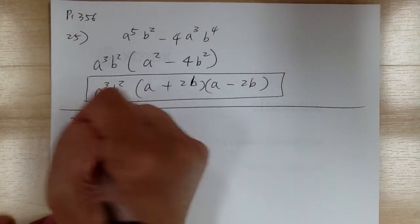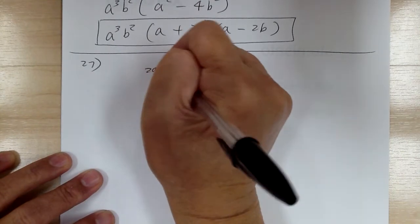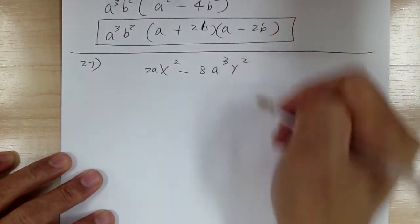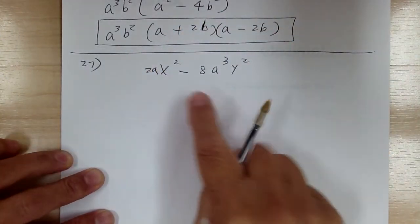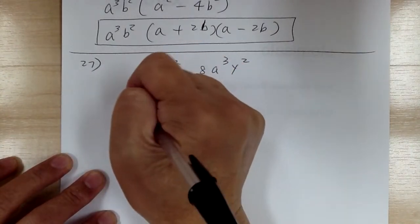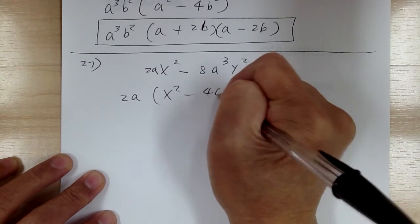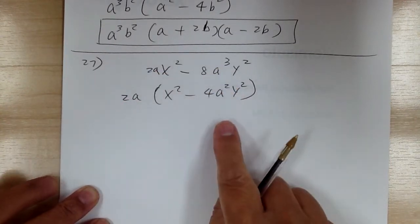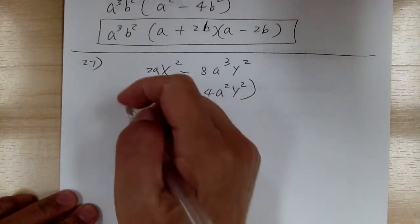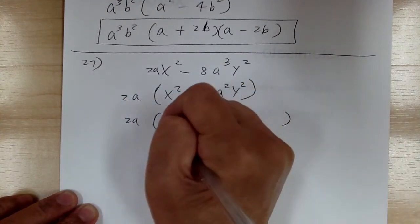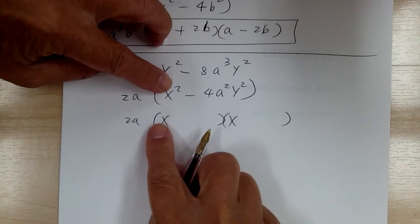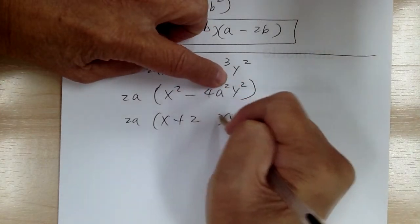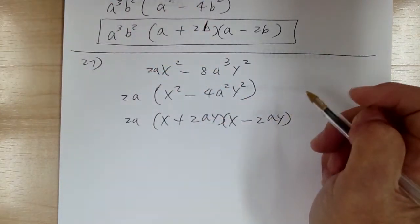Number 27. You have 2ax squared minus 8a cubed y squared. Step 1, common factor — factor out 2 and factor out a. So it would be 2a times x squared minus 4a squared y squared. Double check. This is step 2a, difference of squares. You need x, x, plus, minus, and 2 times 2 for the 4, and ay, ay for the a squared y squared. And that's it.